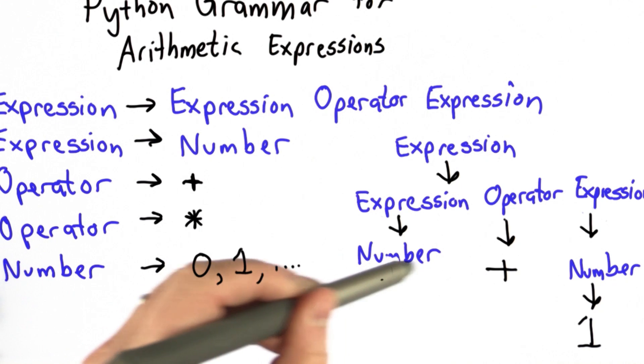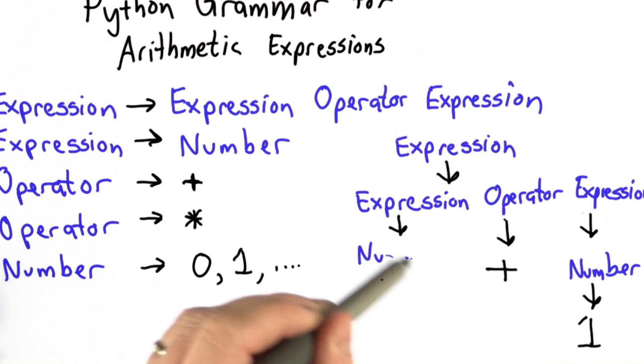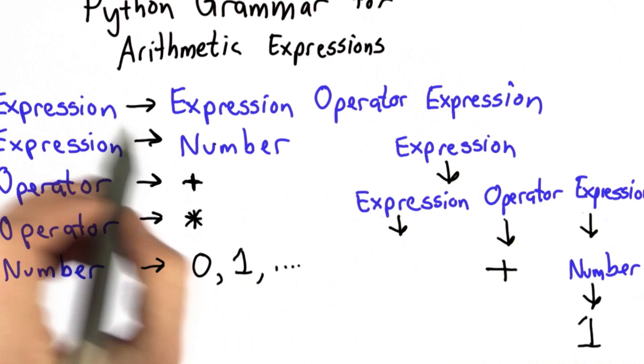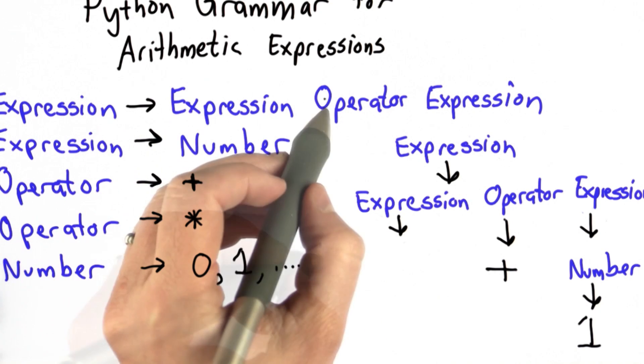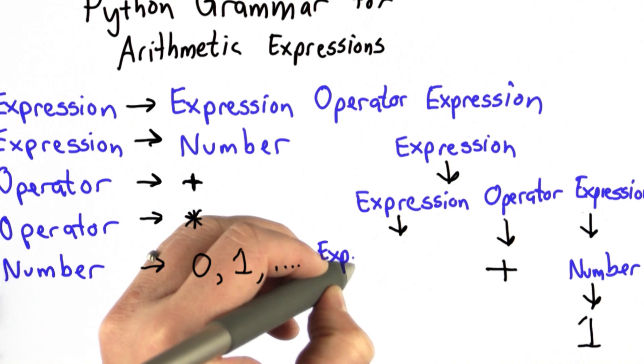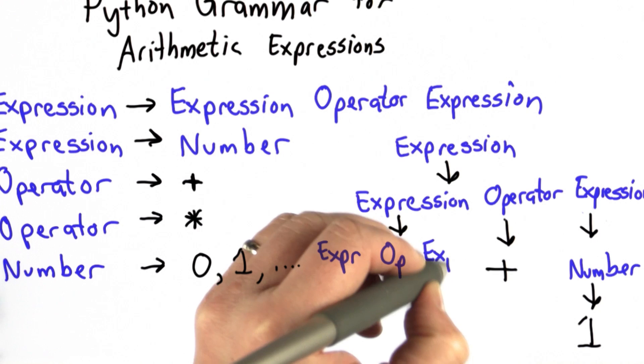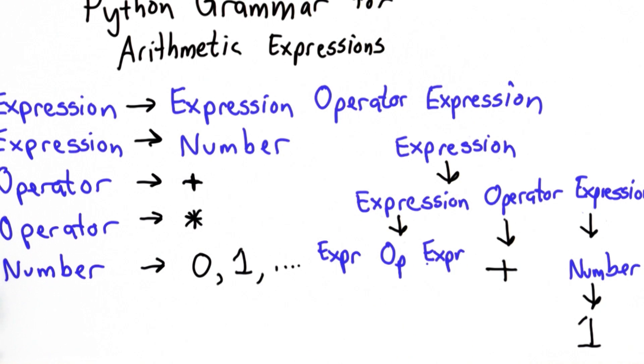We can do a lot more than this though. Instead of replacing this expression with a number, we could replace this expression with another expression operator expression. So we're going to use the first rule, replacing expression with expression operator expression here. And I'm going to start abbreviating, so expr is an abbreviation for expression, op for operator and expr.